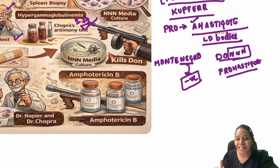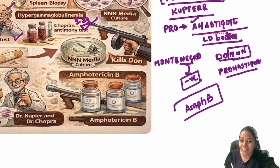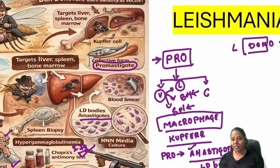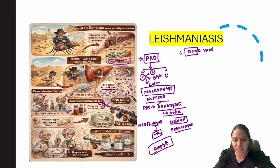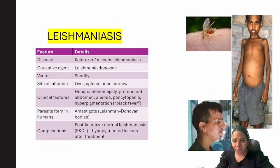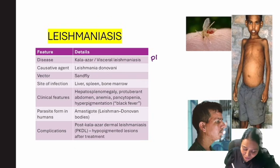Treatment is very important. The drug of choice for leishmaniasis is amphotericin B. This is a severe disease and amphotericin B is given. That completes the story for visceral leishmaniasis. Now let us quickly go through the table to finish this topic.